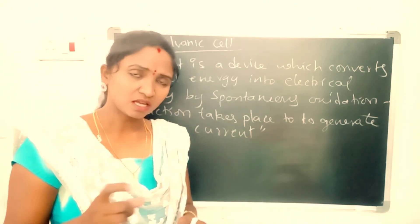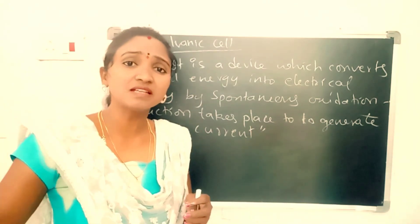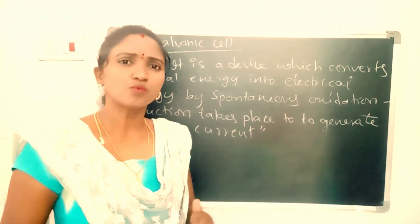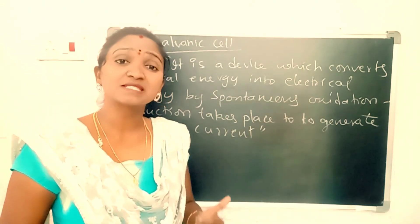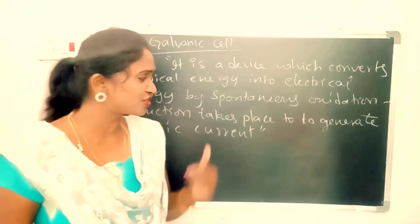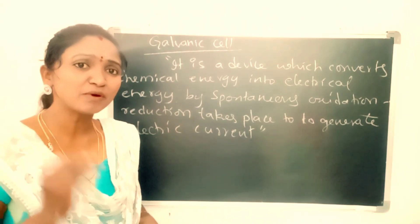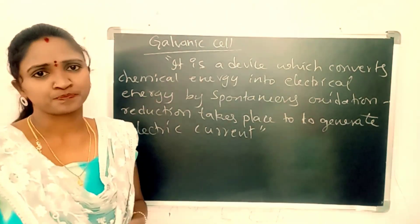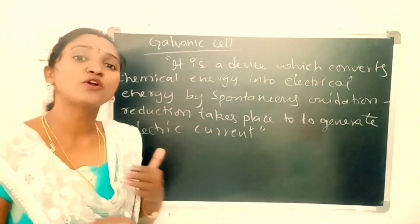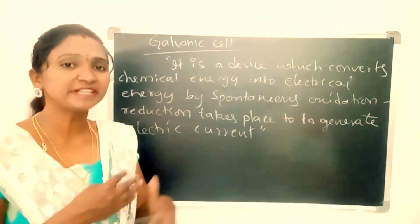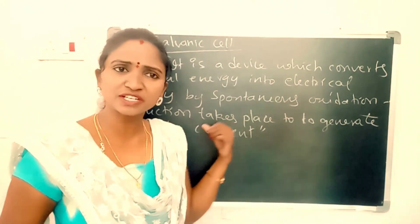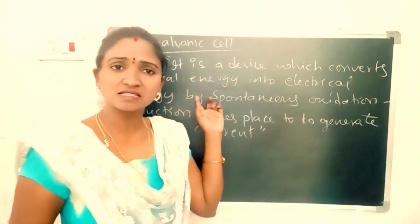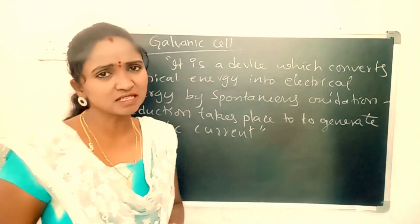So this is a device which converts chemical energy into electrical energy. The type of chemical reactions that take place here are spontaneous oxidation-reduction reactions. So spontaneous oxidation-reduction reactions are used in galvanic cell to produce electricity.